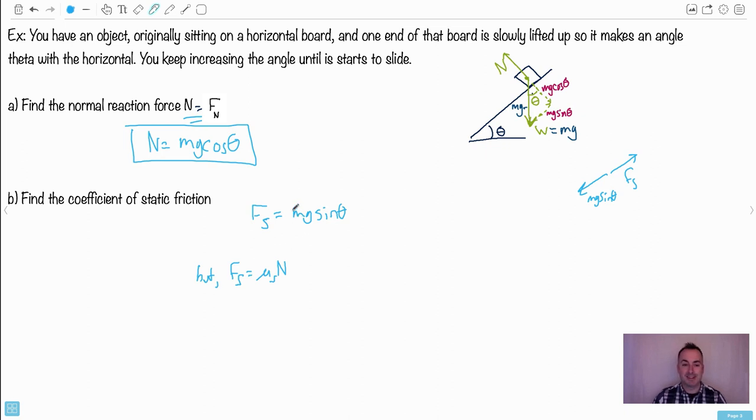So good news. Do we know what N is? We sure do. We actually know what N is. N is this. So we shove it into here. That means I can say that Fs equals mu s times N, which is mg cos theta. But we said it also equals mg sin theta. So now I have mu s times mg cos theta equals mg sin theta. Do you notice the mgs can cancel out?